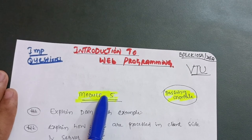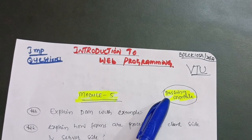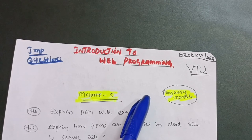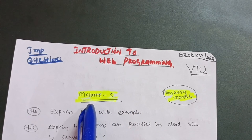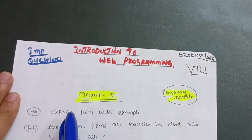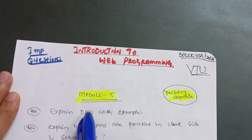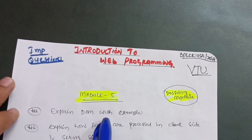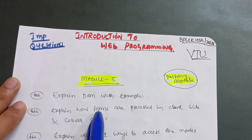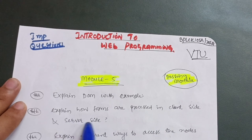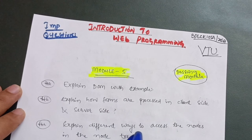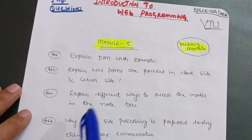Module 5 is the first passing module, and it is the simplest one, so I have taken it first. First, explain DOM — that is, Document Object Model — with example. Next, explain how forms are processed in client-side and server-side. Next, explain different ways to access the nodes in the node tree. That is the most important one.